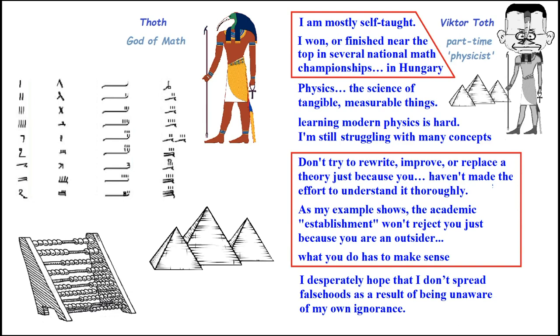The question is whether math is physics and physics is math. He goes further and says physics is the science of tangible, measurable things. That's going to be funny that he mentions that because he's going to be talking about dark matter, which is neither tangible or measurable itself.